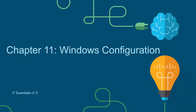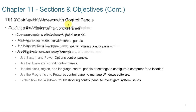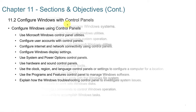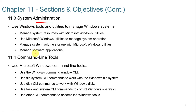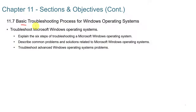This video series accompanies the Cisco Netacad IT Essentials 7.0 course. This video is Chapter 11: Windows Configuration. In Chapter 11, we're going to look at Windows Desktop and File Explorer, configuring Windows with control panels, systems administration, command line tools, Windows networking, common preventative maintenance techniques, and the basic troubleshooting process for Windows operating systems.